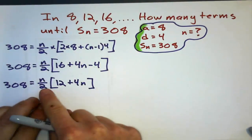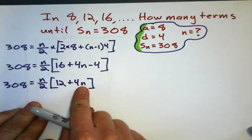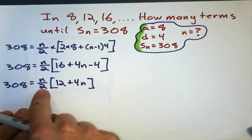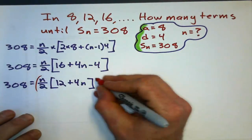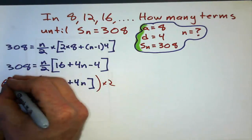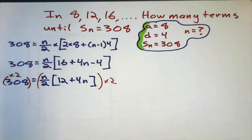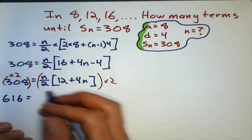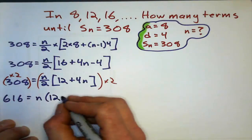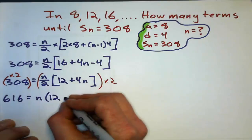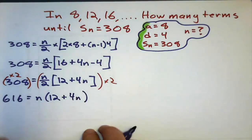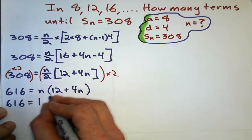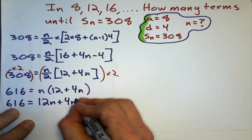Keep simplifying inside the brackets: 16 minus 4 is 12, plus 4n. Now, don't expand that n over 2 through — we don't really need to do that. What we can do is eliminate that fraction by multiplying both sides by 2. So 308 times 2 gives me 616, and multiplying that by 2 eliminates the denominator. So now: 616 equals n times 12, which is 12n, and n times 4n is 4n squared.